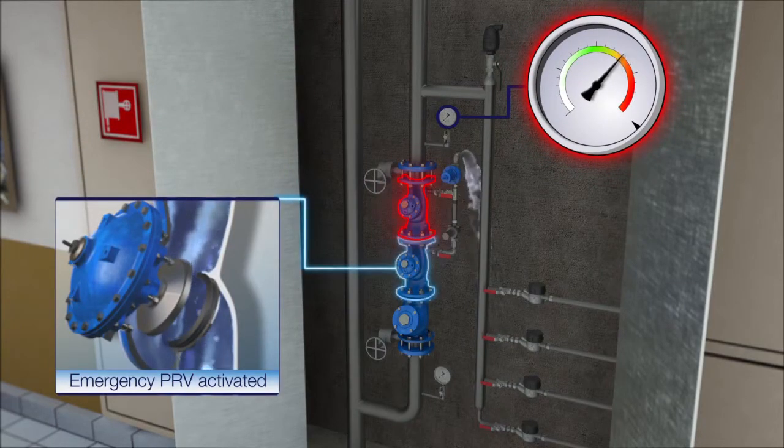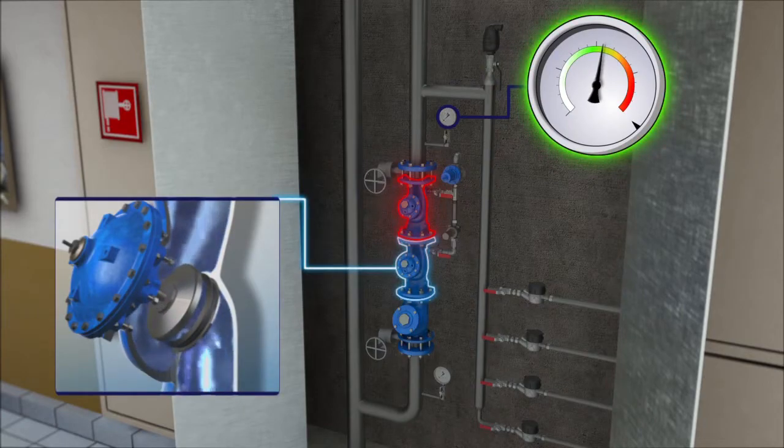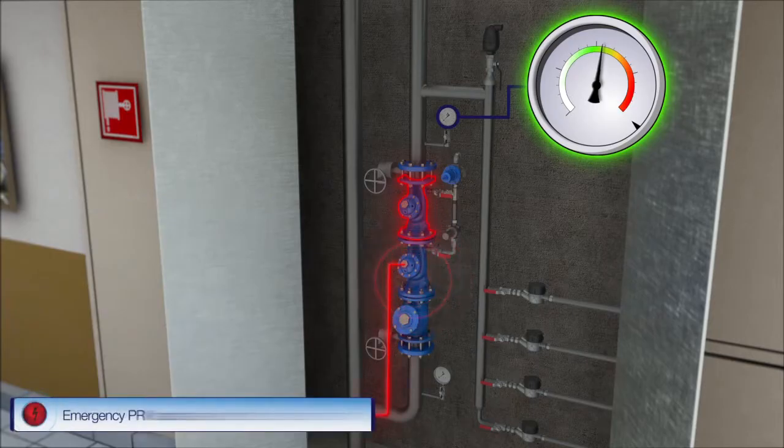The backup pressure reducing valve senses the undesired excessive pressure and kicks into operation, keeping the system in slightly higher but safe downstream pressure setting. A fault signal is sent to the building's control room by the limit switch, notifying the building's service team to address the problem.